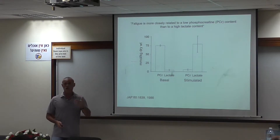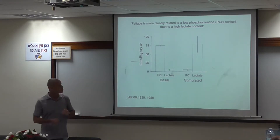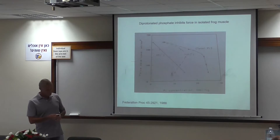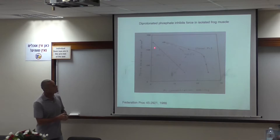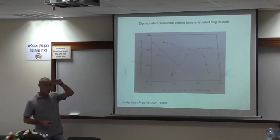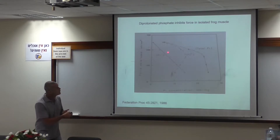At this time, we didn't really understand what the relationship was between phosphocreatine content and force generation. No studies described the mechanism whereby phosphocreatine could directly impact force generation. However, that same year, Doug Wilkie published a review where he showed a very strong inverse relationship between force studied in isolated frog muscle and the concentration of the diprotonated form of inorganic phosphate — H₂PO₄⁻. If you look at the plot, you see phosphate concentration increasing and a very strong inverse relationship with force.